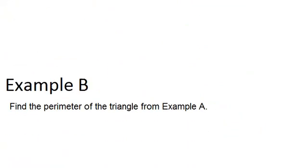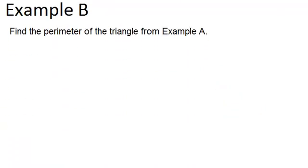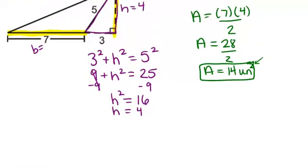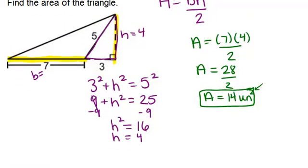Let's go to example B. Find the perimeter of the triangle from example A. Let's go back to example A, and this time we're trying to find the perimeter of that whole triangle. So far we know two sides of the triangle. We know this side right here is 7, and this side right here is 5. In order to find the perimeter, we need to know all three sides and add them up.